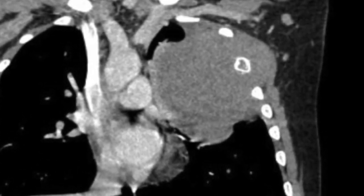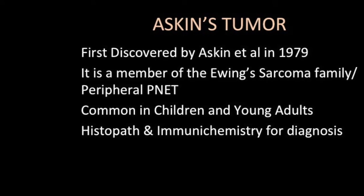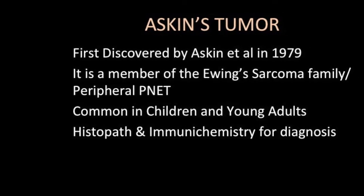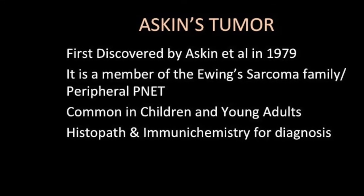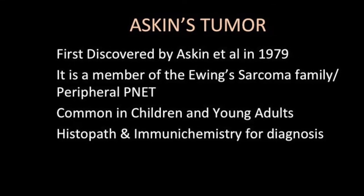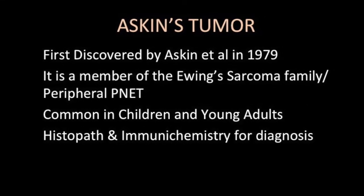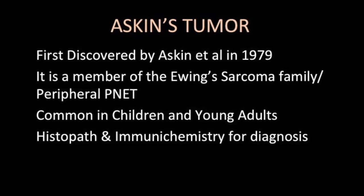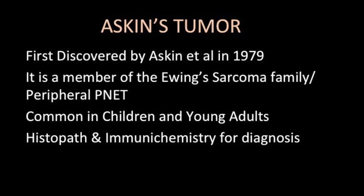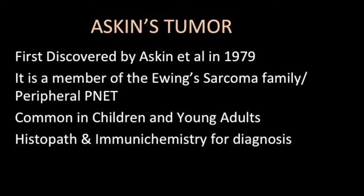It is not common, but we see it in children and young adults. It was first discovered by Askin in 1979. It is a member of the Ewing sarcoma family of tumors. It also comes under the peripheral PNET group, and usually it comes in the round cell category. Hence you need immunohistochemistry to differentiate it from other round cell sarcomas.